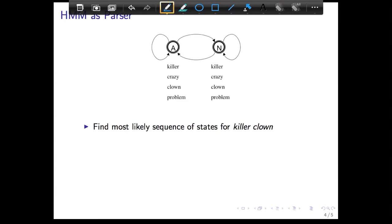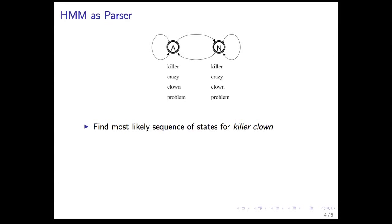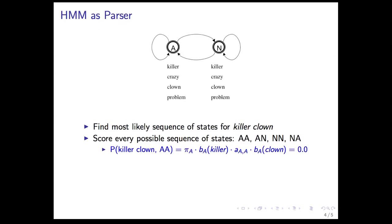Well, in this module, we're going to look at a naive way to do it, which is just enumerate all the states. So we get all possible state sequences for killer clown, so AA, AN, NN, and NA. Since there are only two states, these are only the possibilities that we have.